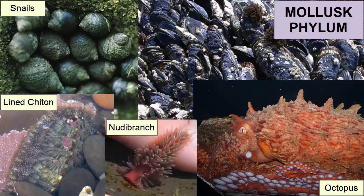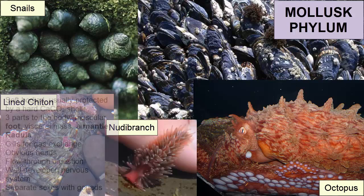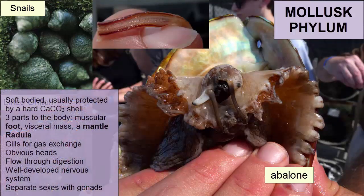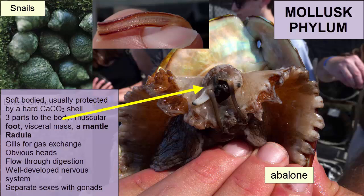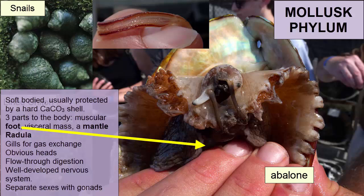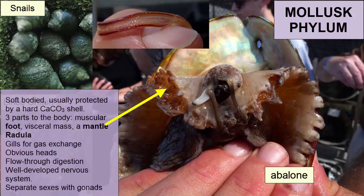The Mollusca phylum consists of 58,000 marine species. They are soft-bodied, usually protected by a hard calcium carbonate shell. There are three parts to the body: a muscular foot usually used for movement, a visceral mass containing most internal organs, and a mantle — a fold of tissue that drapes over the visceral mass and secretes a shell if one is present. Many molluscs have a toothed radula used for digging holes in rocks, removing algae, or drilling through shells.